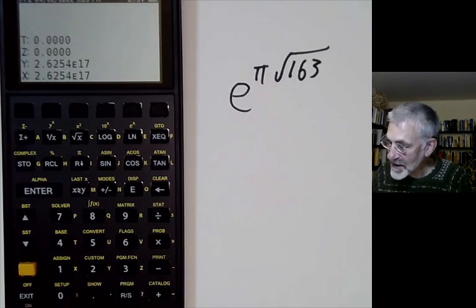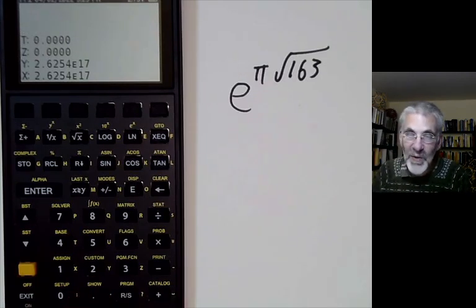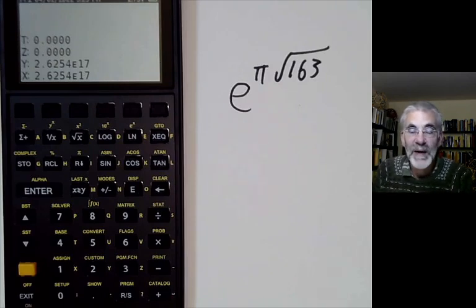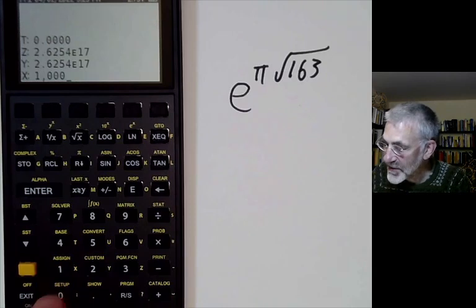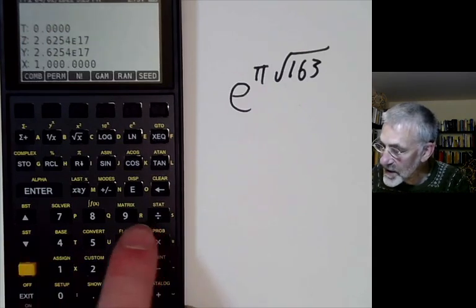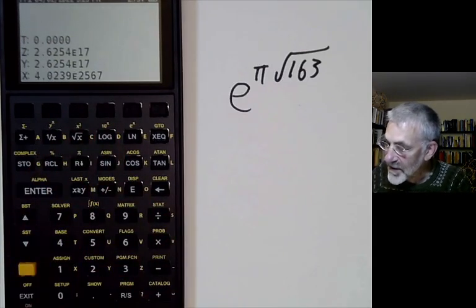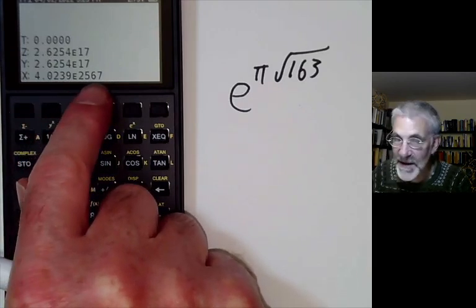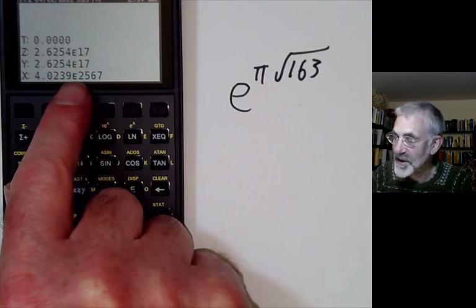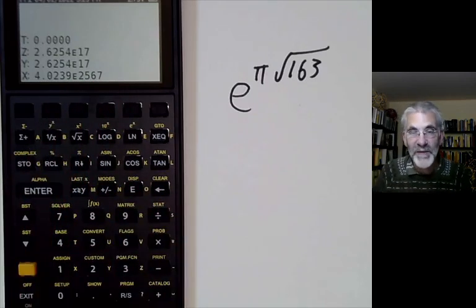We can also do things. For ordinary calculators, if you try and work out 100 factorial, it will give you an error message. This one, let's try 1000 factorial. So there it gives 1000 factorial, about 4 times 10 to the 2567. So it allows the exponent in numbers to go up to several thousand.